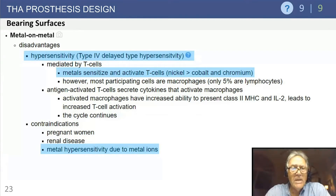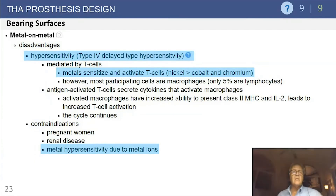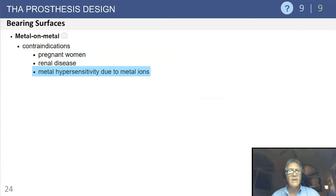Disadvantages of metal-on-metal include type 4 delayed-type hypersensitivity — a T-cell mediated process intricately related to activation of macrophages and cytokines, which reactivate T-cells, forming a vicious cycle. Activated macrophages present MHC classes and release IL-2, leading to continued T-cell activation. Metal-on-metal surfaces are contraindicated in pregnant women, patients with renal disease, and anyone with a history of metal hypersensitivity due to metal ions.